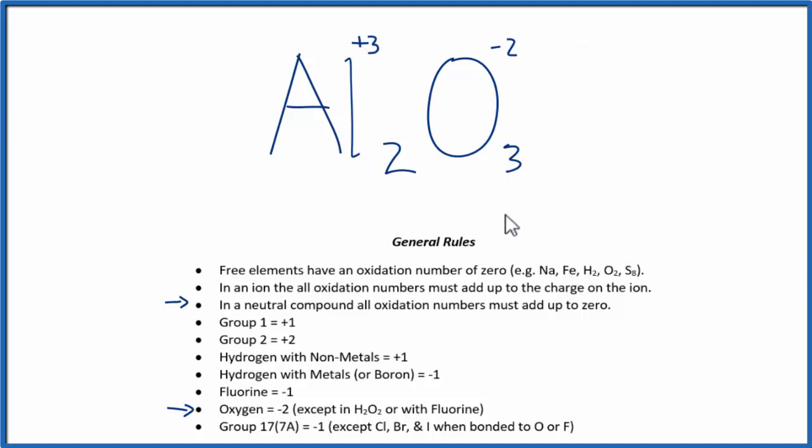So to recap, we found the oxidation number for the element that we knew, oxygen in this case, and then we used that to figure out what the oxidation number on the aluminum would be.